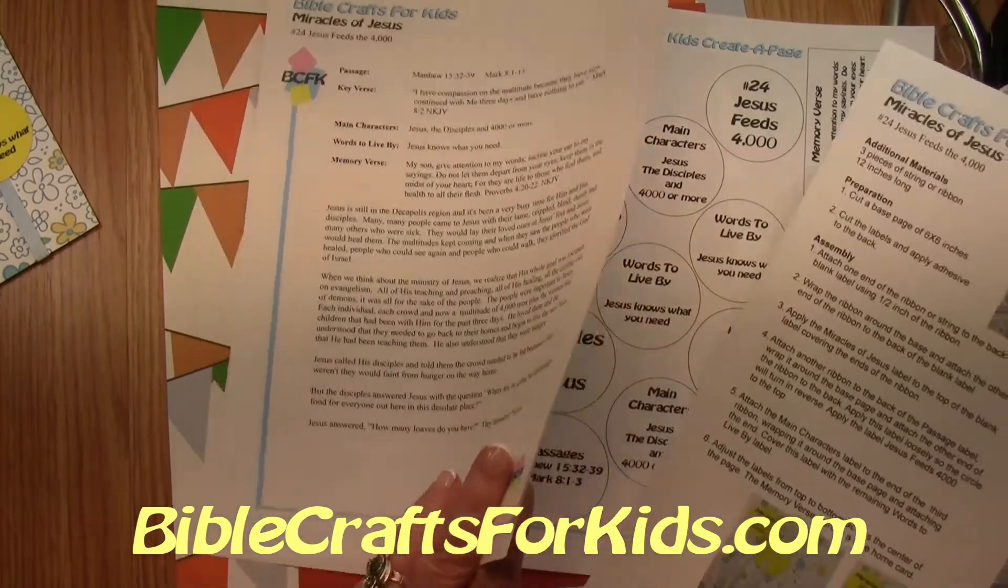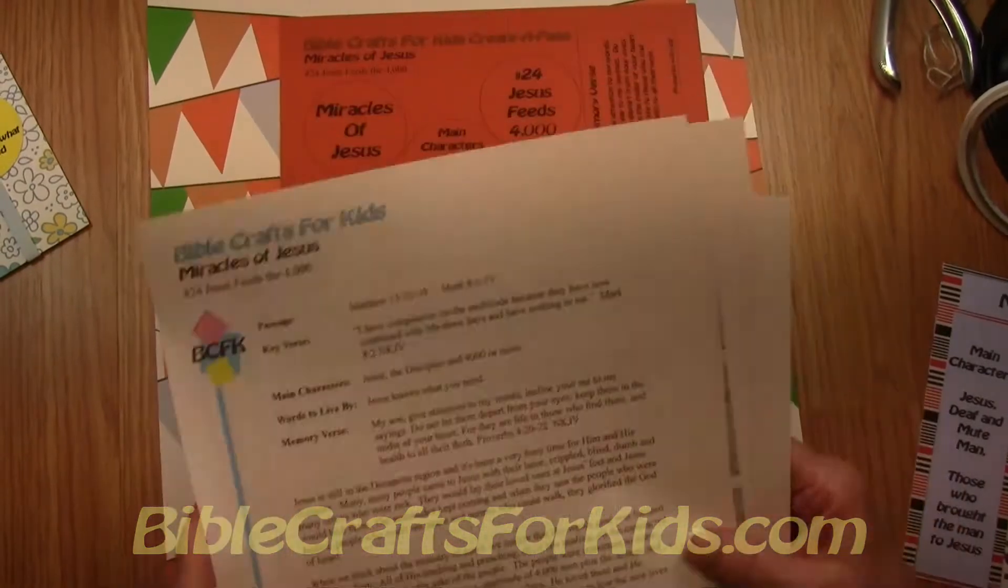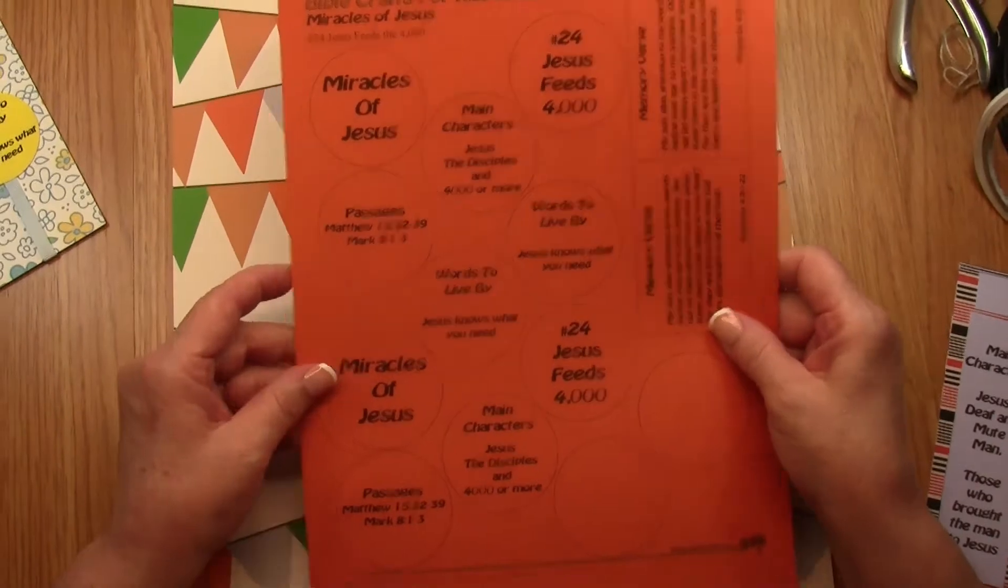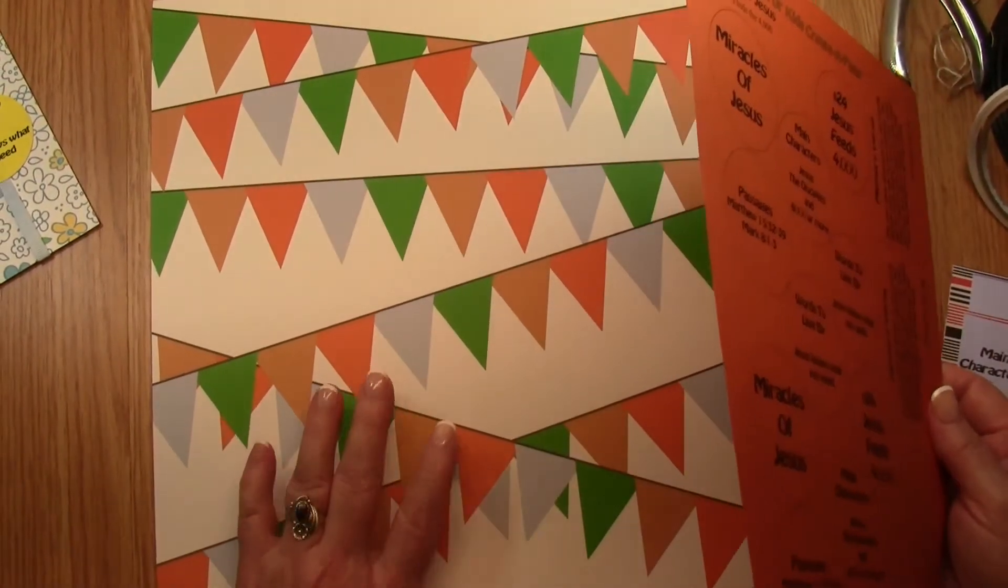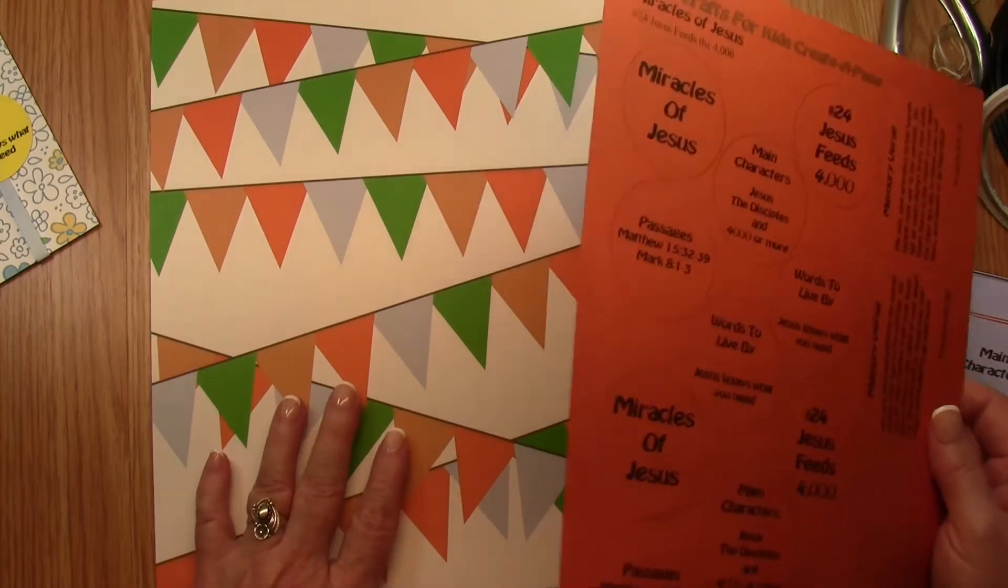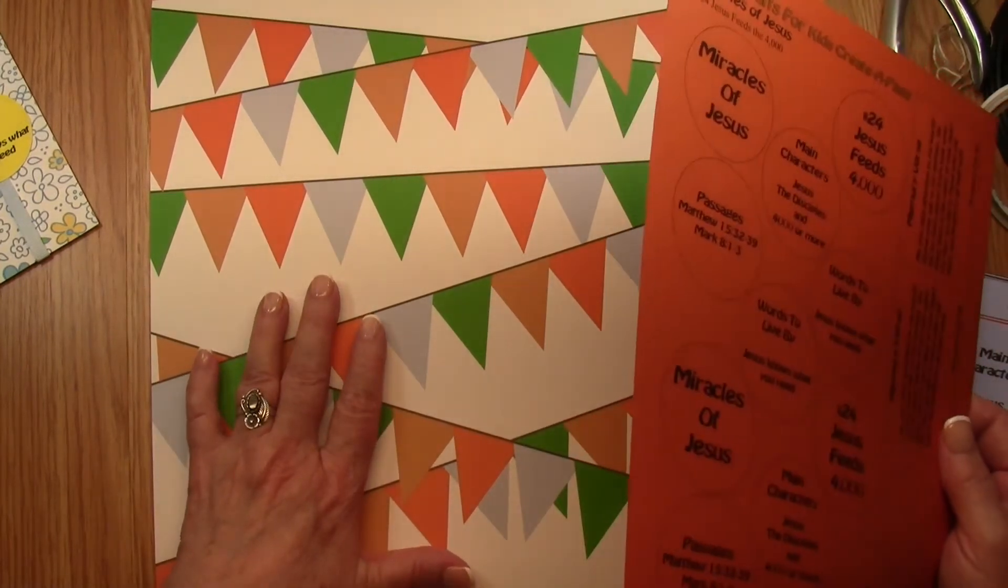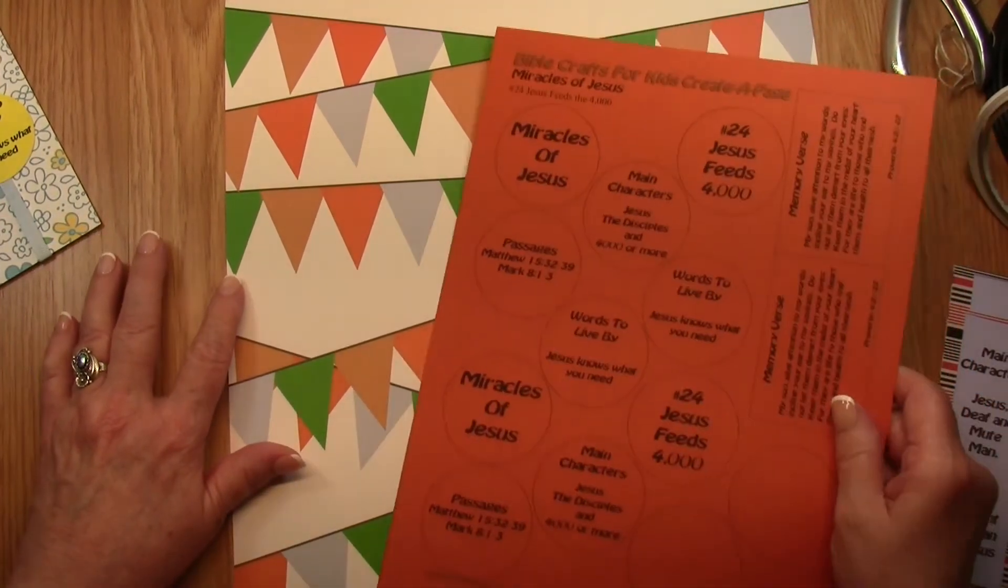First you need to go to BibleCraftsForKids.com and download the lesson and creative page activity which comes with the lesson, the instructions, and the labels. I have printed my labels on this orange paper and my base is all the flags. Now our base is going to be six by six, and so I'm going to cut this in six by six, and I'm also going to cut one half inch strip.